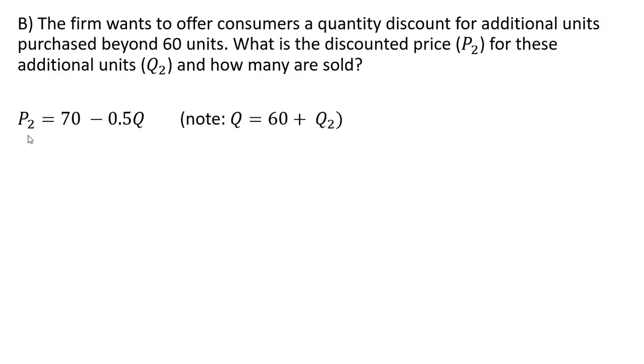So the discounted price, P subscript 2, equals 70 minus 0.5Q. This is just our inverse demand from the beginning of this problem.